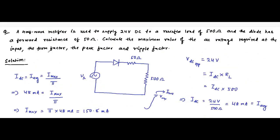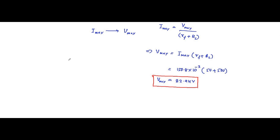The other parameters asked are form factor, peak factor, and ripple factor. Form factor for any rectifier circuit — be it half wave or full wave — is given by the ratio of the RMS value divided by the DC or average value. That is called the form factor: RMS value by average value.